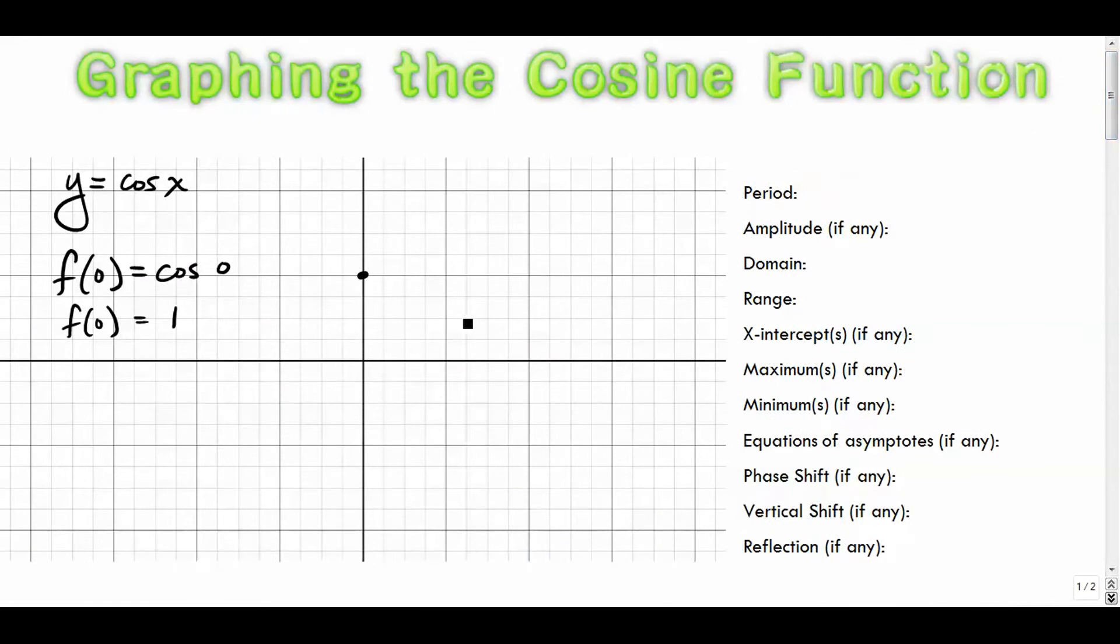So we're going to graph those five yellow points on our coordinate system here. I just proved that the cosine graph repeats itself every two pi units. That's called the period. So I'm going to put two pi over here. I'm going to cut that in half to get pi. Cut that in half to get pi over two. And cut that in half to get three pi over two. When I graph these things, I'm constantly thinking about fourths.